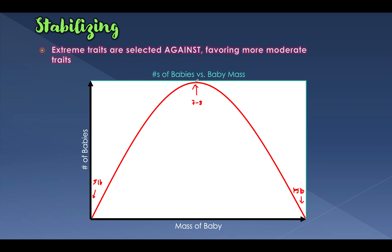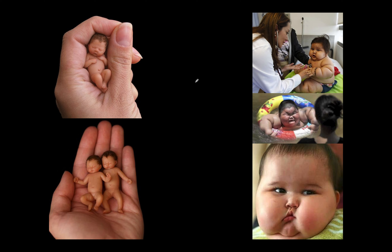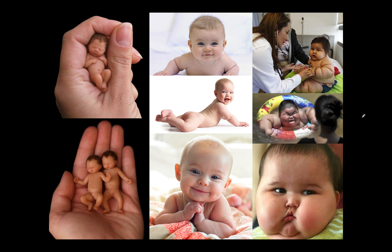We say that's stabilizing selection because the population stabilizes around the middle. We don't see a lot of little Thumbelina babies — obviously just art — and we don't see a lot of these gigantic chubby babies either. Most babies fall in this middle spectrum. That's stabilizing selection.